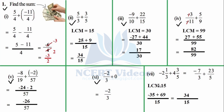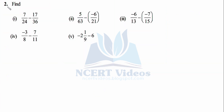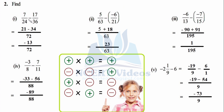That completes Question 1. Question 2: Find the subtraction. First part: 7/24 − 17/36. Different denominators — take the LCM. Trying 36 × 1 = 36; 36 is not divisible by 24 exactly. Try 36 × 2 = 72; and 24 × 3 = 72. So LCM = 72. Now: (72/24) × 7 = 21, minus (72/36) × 17 = 34. Subtracting: 21 − 34 = −13. Answer: −13/72.